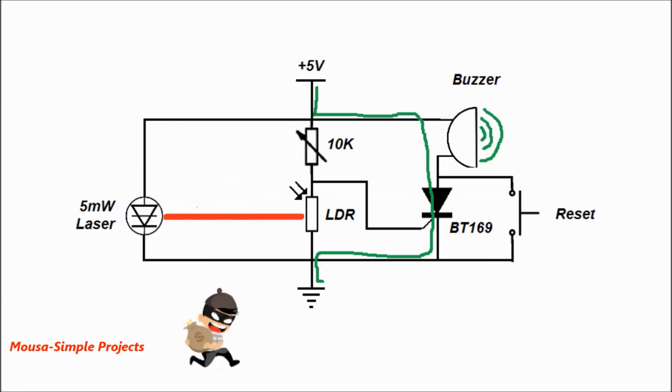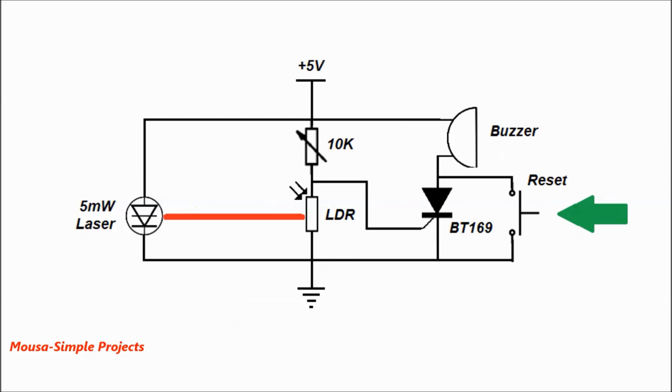The buzzer stays on even after the laser beam comes back to the LDR because the SCR is a latching switch. To turn off the alarm, you have to short out the anode and cathode of the SCR for less than one second using this push button.